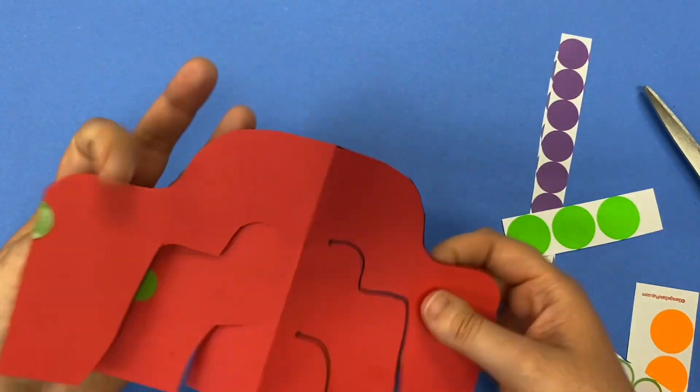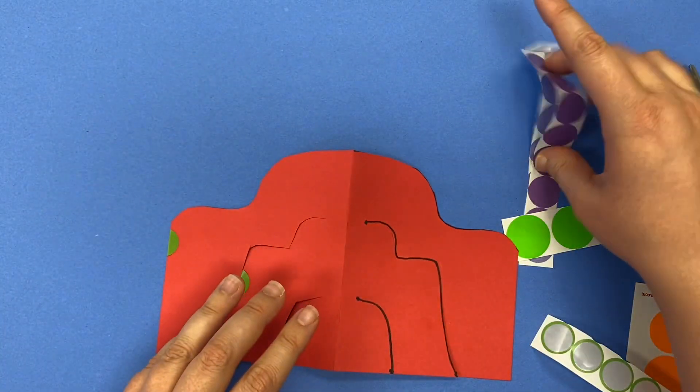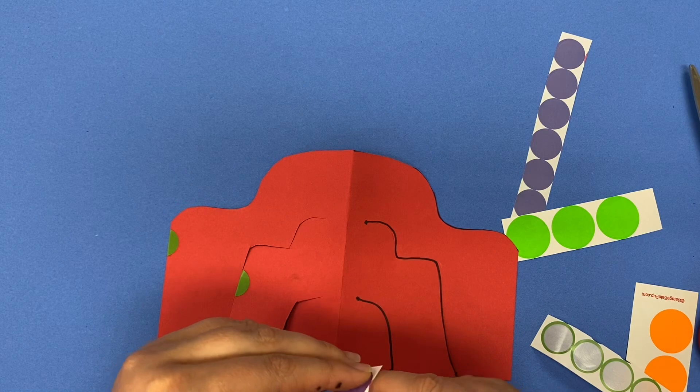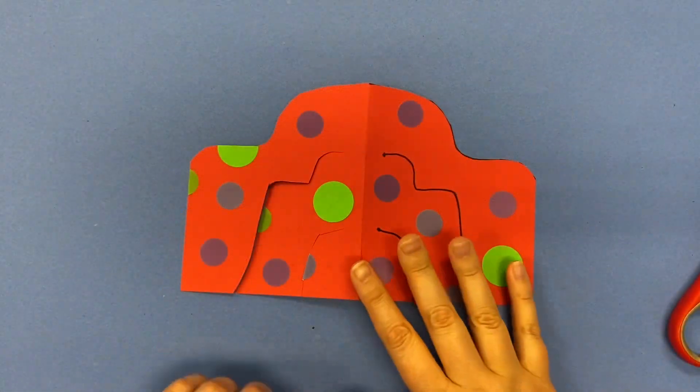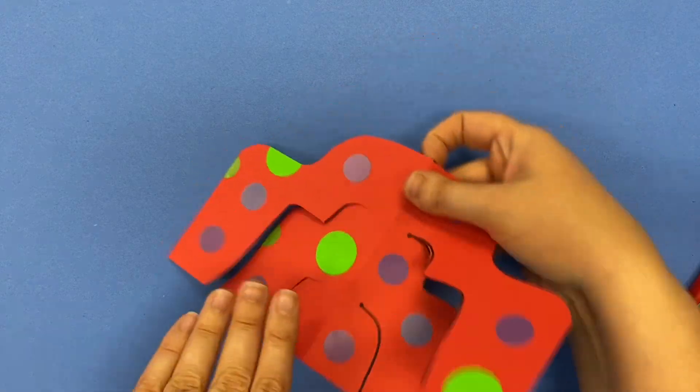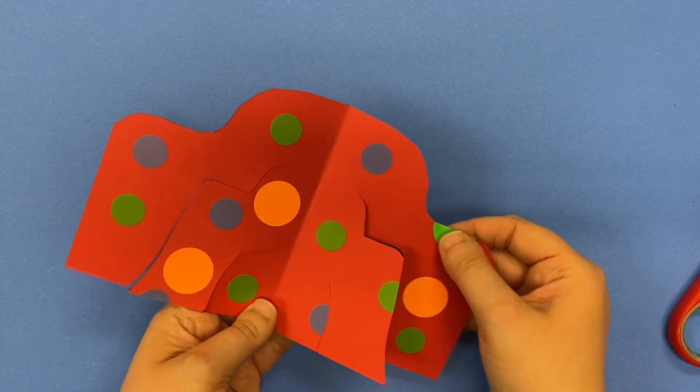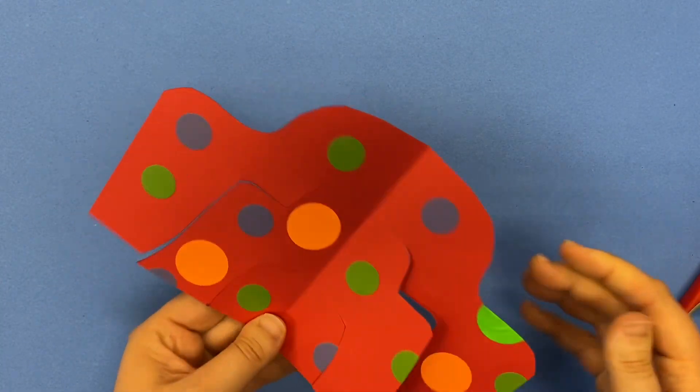So I have decorated both sides of my Stabile with my dot stickers. And now I'm ready to make this flat piece of artwork three dimensional.